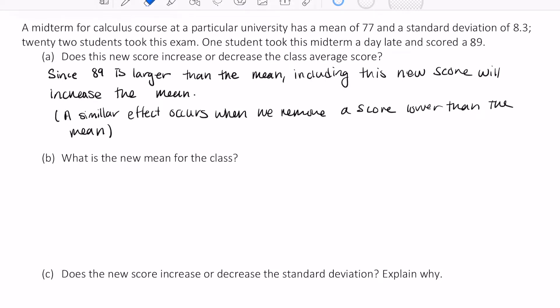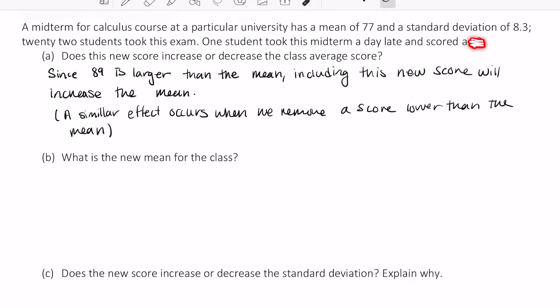Now before we move on to part b, I want to point out that had the score been lower than 77, say the score instead of 89 had been a 69, then that would have brought down the mean. Additionally, we could have added a score lower than the mean like 56. If we had added a 56, that would have also decreased the mean.